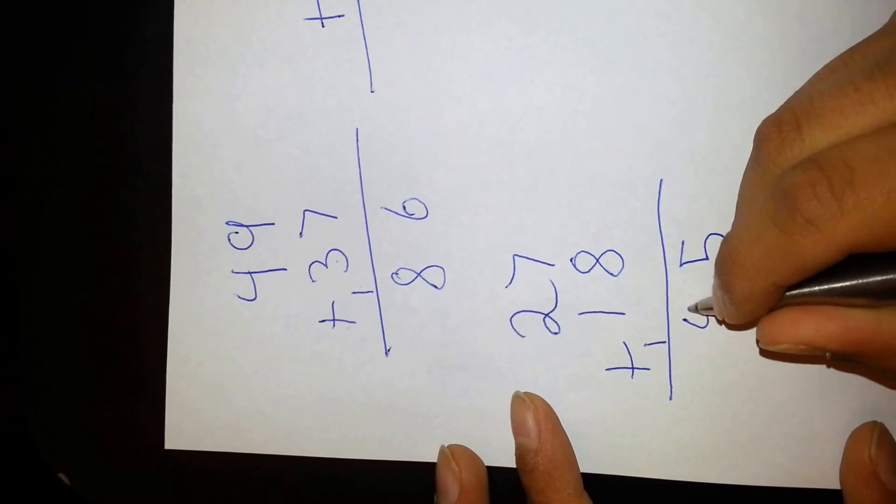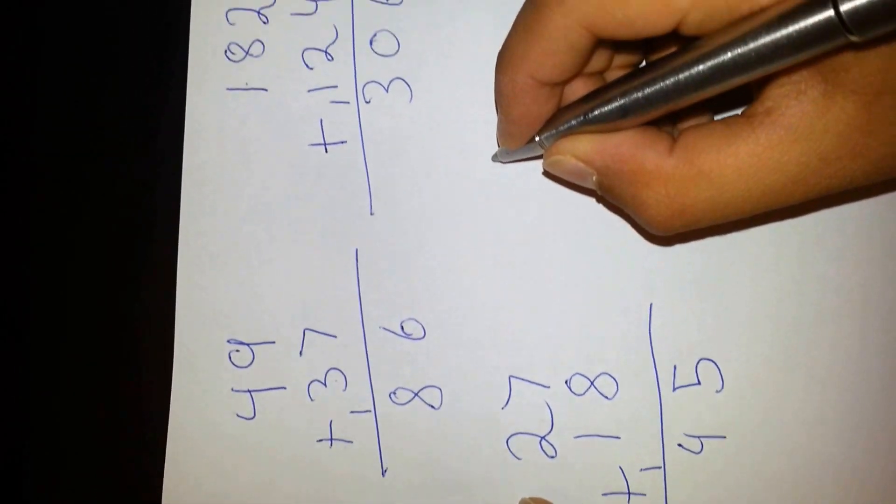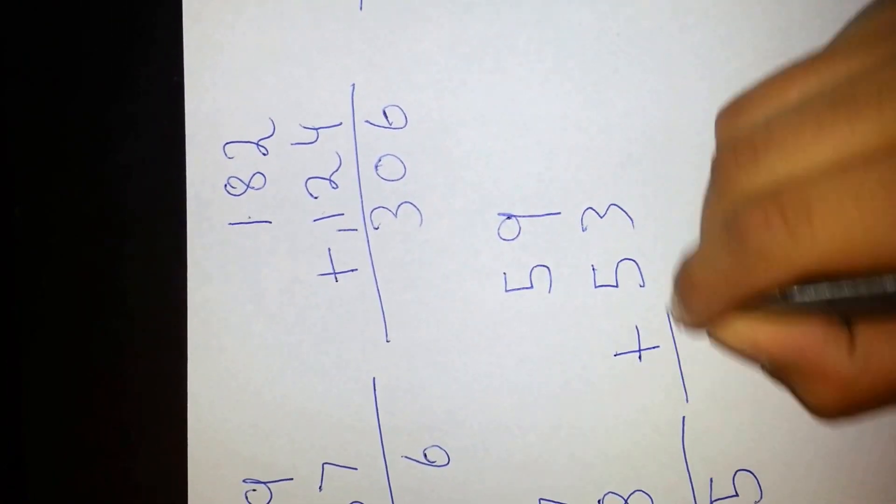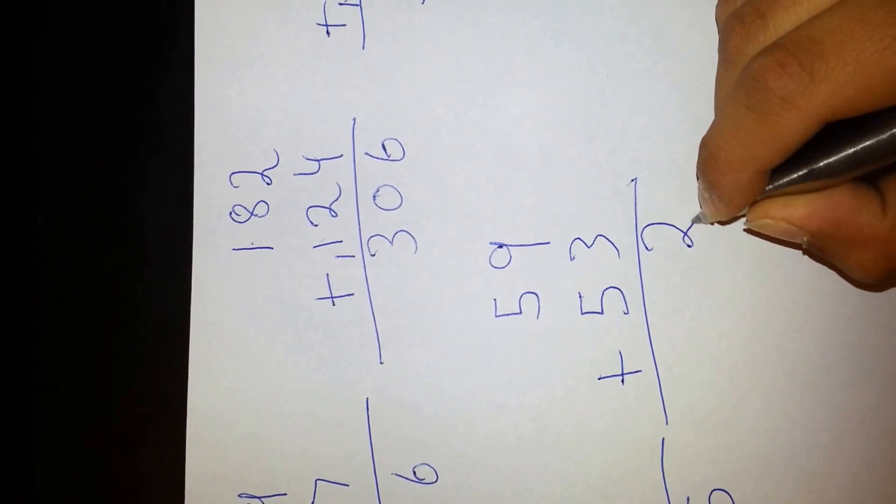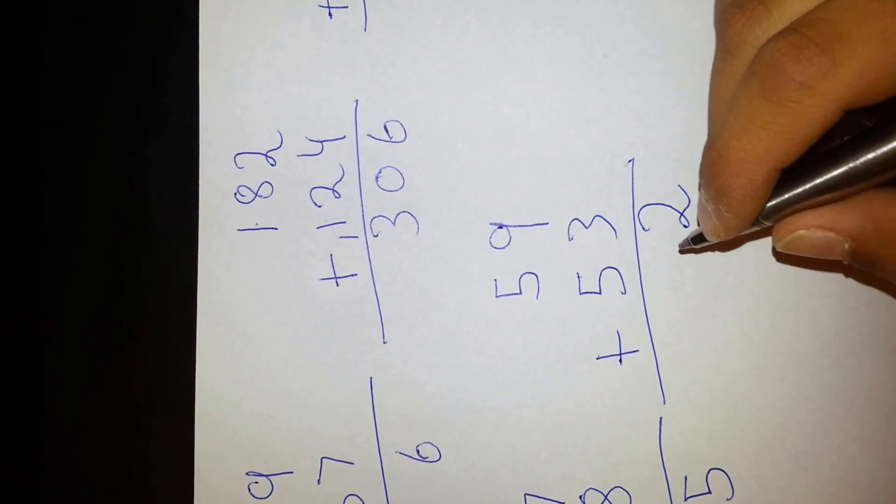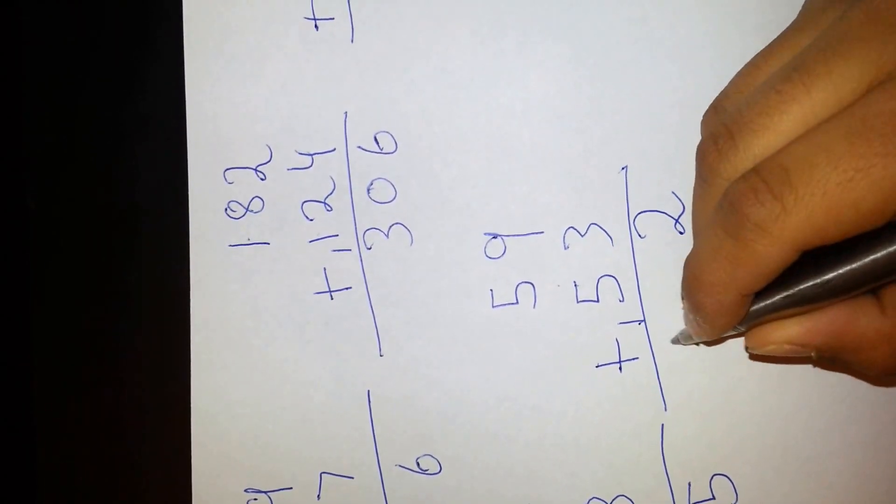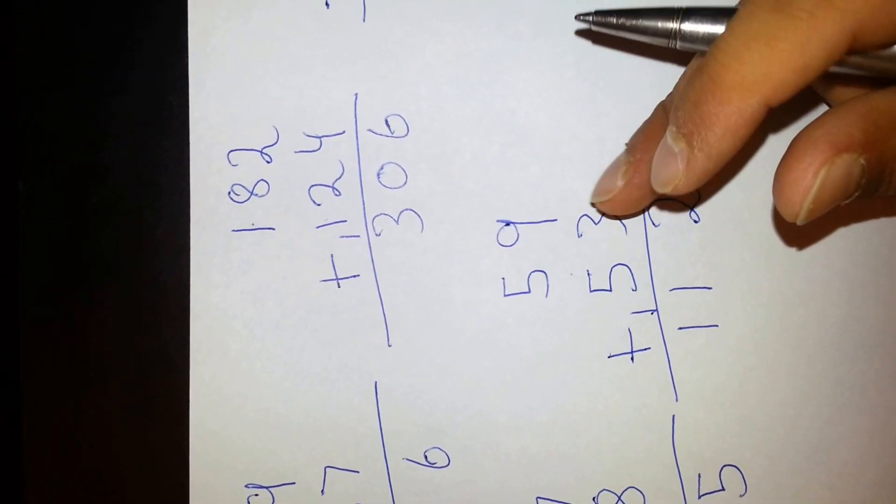Next, 59 plus 53. 9 and 3 is 12, put down the 2. Guess what happens? You carry over the 1. 5 and 5 and 1 is 11, so you put down the 11. Now you don't carry that over at the end of the sum.